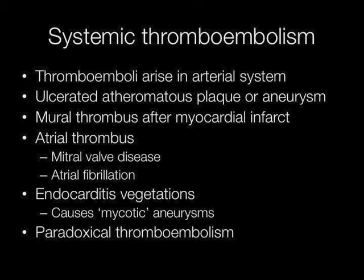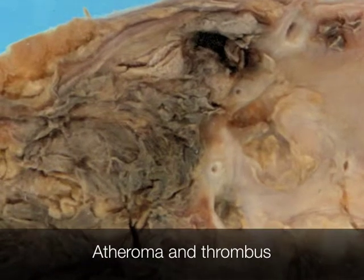In systemic thromboembolism, the thromboemboli arise in the arterial system. They may develop on an ulcerated atheromatous plaque or in an aneurysm. The mural thrombus following a myocardial infarct may give rise to a thromboembolism. Atrial thrombi in patients with mitral valve disease or atrial fibrillation may embolise. Vegetations from endocarditis may embolise resulting in mycotic aneurysms. This vessel shows thrombosis of a complicated atheromatous plaque.